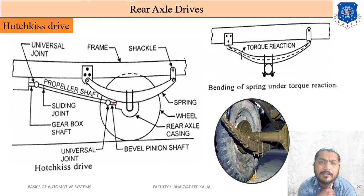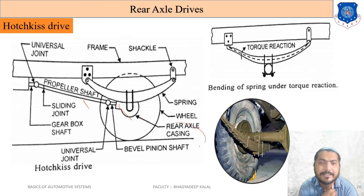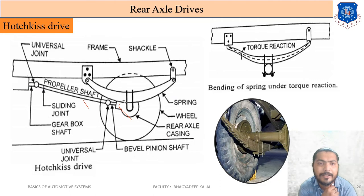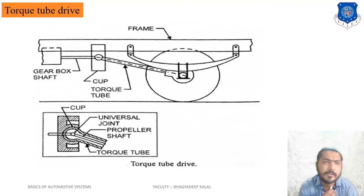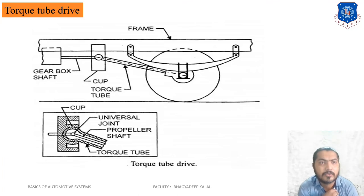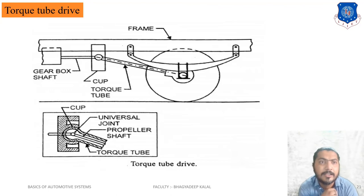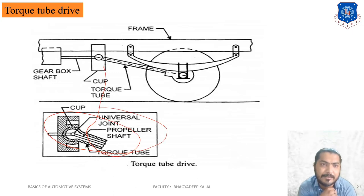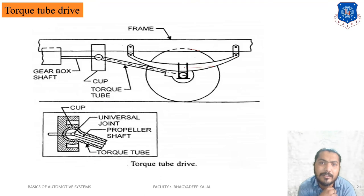In the Hotchkiss drive, the propeller shaft and differential mechanism are visible in open view on the vehicle. The torque tube drive is a special type, mainly used in heavy vehicles. It is more costly compared to the Hotchkiss drive. The Hotchkiss drive is used in cars and light-duty vehicles, while the torque tube drive is used in heavy vehicles.